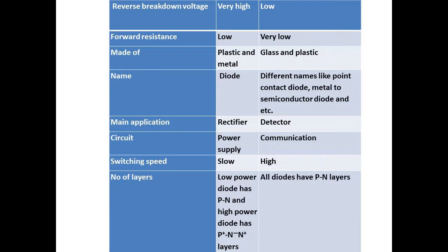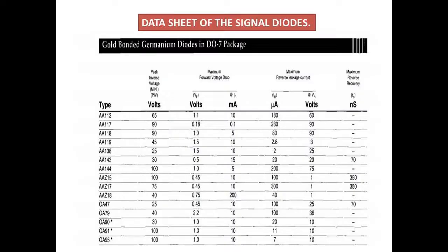Main application - junction diode rectifier, signal diode detector circuit. Junction diode power supply, signal diode communication. Switching speed - junction diode slow, signal diode high. Number of layers - junction diode, low power diode has PN and high power diode has P+ N- N+ layers; signal diode, all diodes have PN layers.